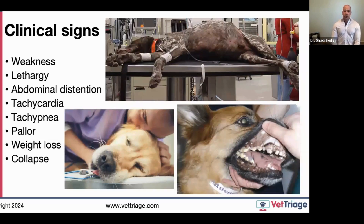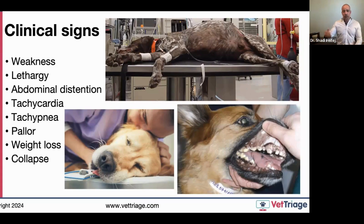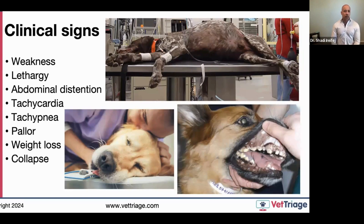Regarding clinical signs: when investigating history more thoroughly, pet owners often describe a longer-term chronicity of signs. My belief is that some dogs developing splenic masses — benign or malignant — have occasional bleeds, become clinical, the body stops the bleed, and the pet improves. If you investigate more thoroughly beyond the acute presentation, you'll often find fluctuating symptoms for months preceding a hemoabdomen presentation.